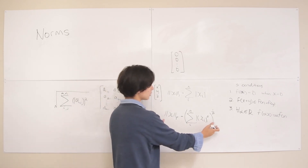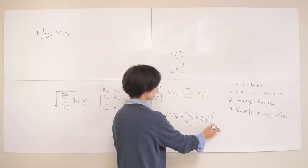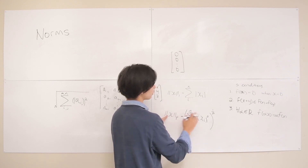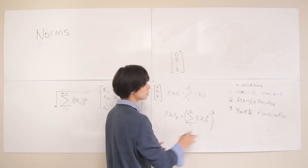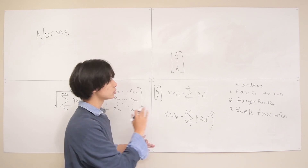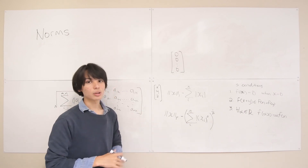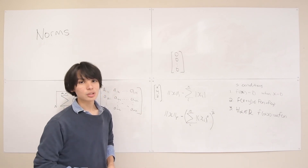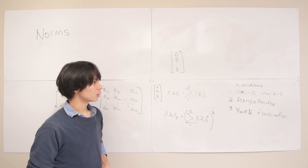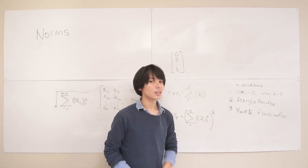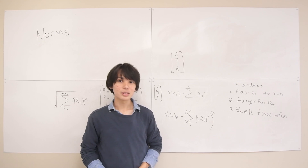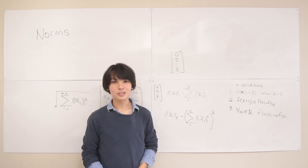To summarize: the three most frequently seen norms in machine learning and this course are the L1 norm, the Euclidean norm (L2 norm), and the Frobenius norm for matrices. All of them satisfy the three conditions that define a norm. That about covers it — see you next lecture.